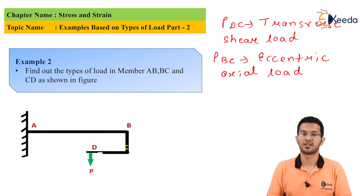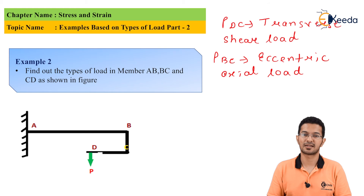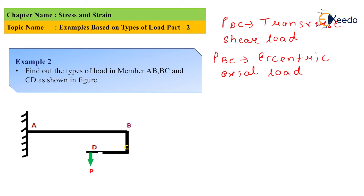For member AB, load P is parallel to the surface and through the longitudinal axis. Hence, load P is transverse shear load.